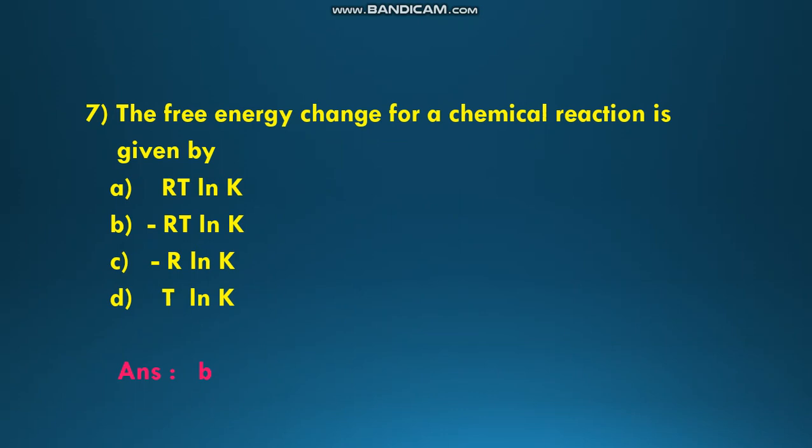The next question: the free energy change for a chemical reaction is given by the equation — options are A: RT ln K, B: −RT ln K, C: −R ln K, D: T ln K. The free energy change, delta G, is equal to −RT ln K, where R is the gas constant, T is the temperature, and K is the equilibrium constant. The answer is B.